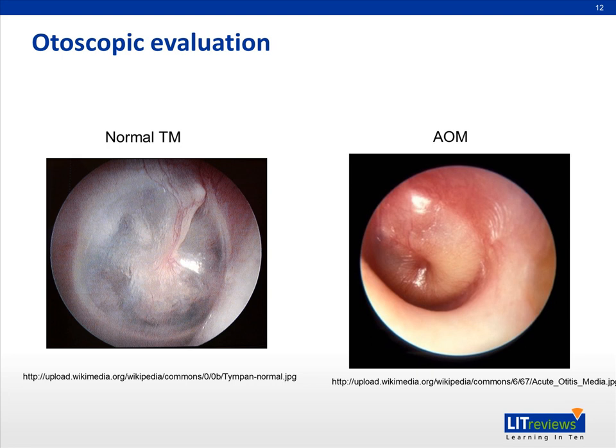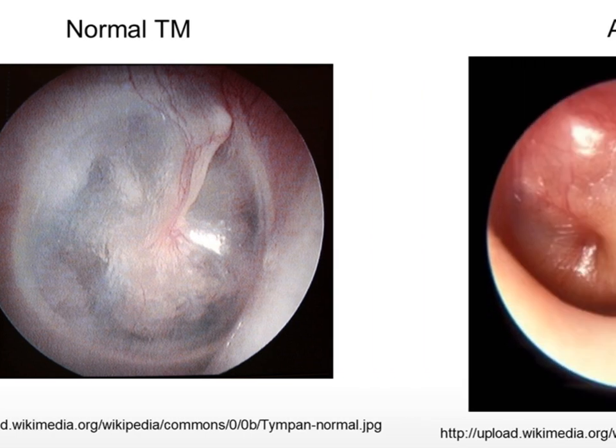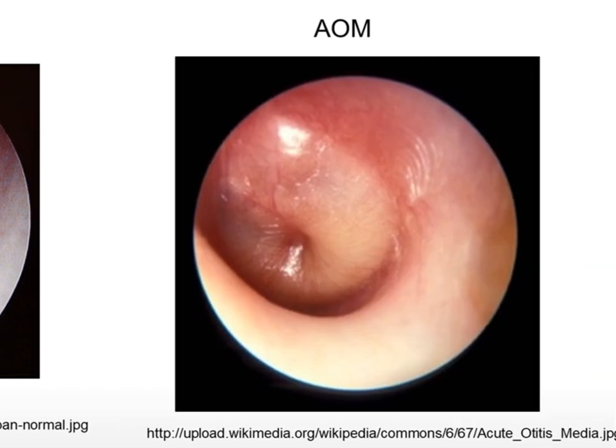This slide shows a normal TM on the left and the TM of a patient with AOM on the right. Note the translucent, pearly white, flat TM with good light reflex in the photograph of the normal TM. Note the erythema, slight dullness, bulging TM, and purulence visible behind the TM in the patient with AOM.